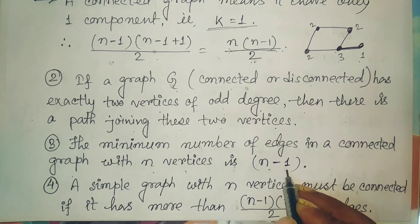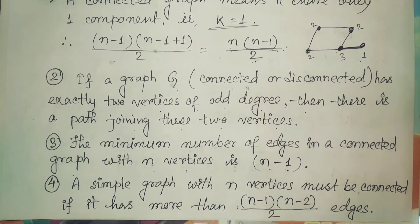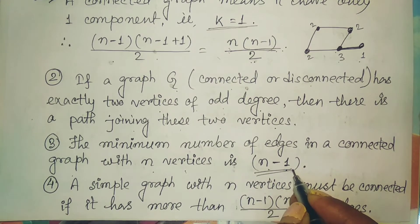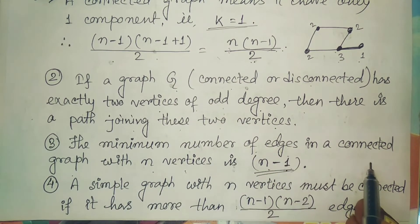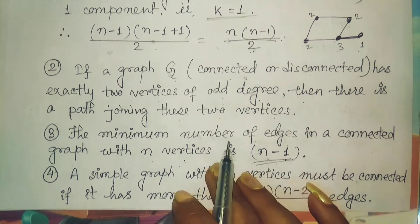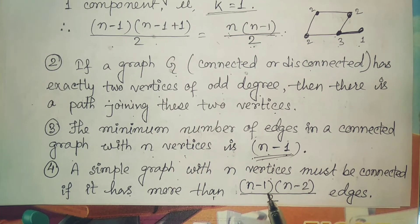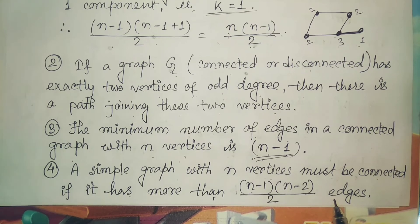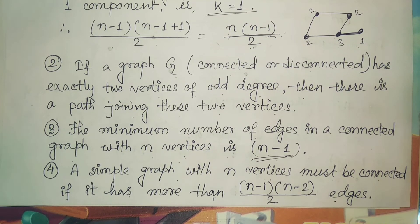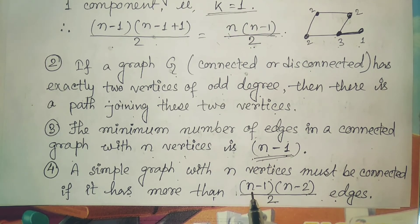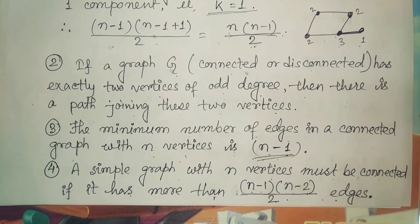The minimum number of edges in a connected graph with n vertices is n−1, because each vertex must connect to the remaining n−1 vertices to maintain connectivity. Additionally, a simple graph with n vertices must be connected if it has more than (n−1)(n−2)/2 edges. That's all for today, thank you.